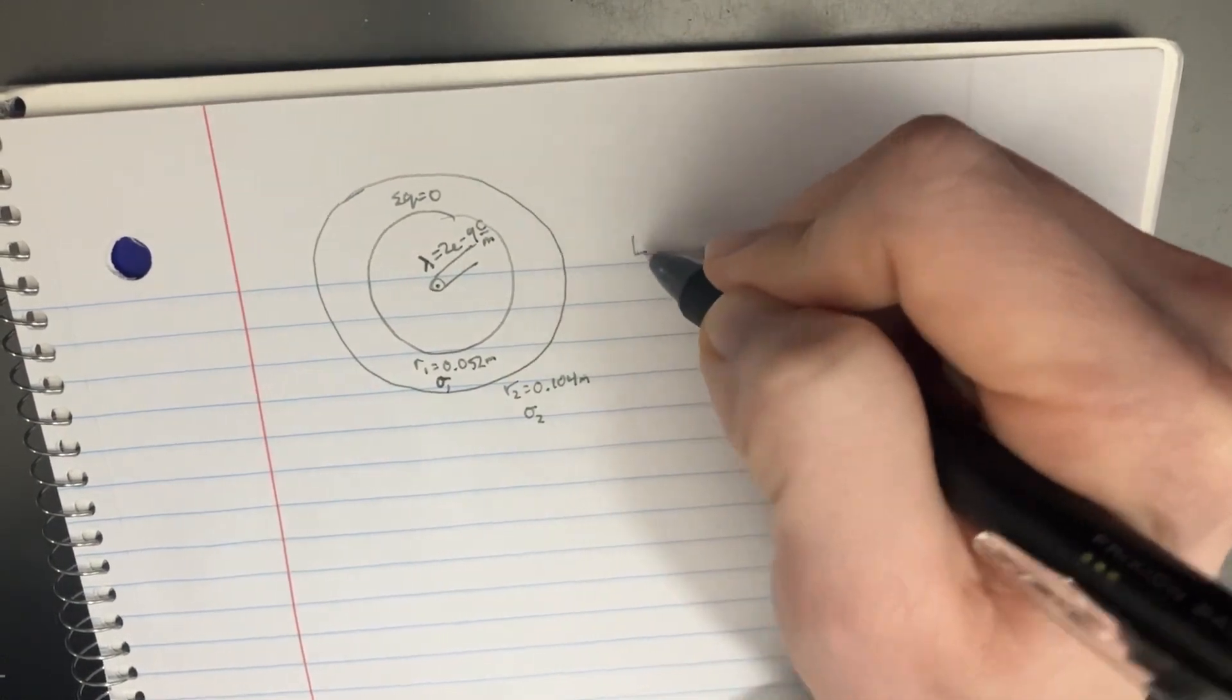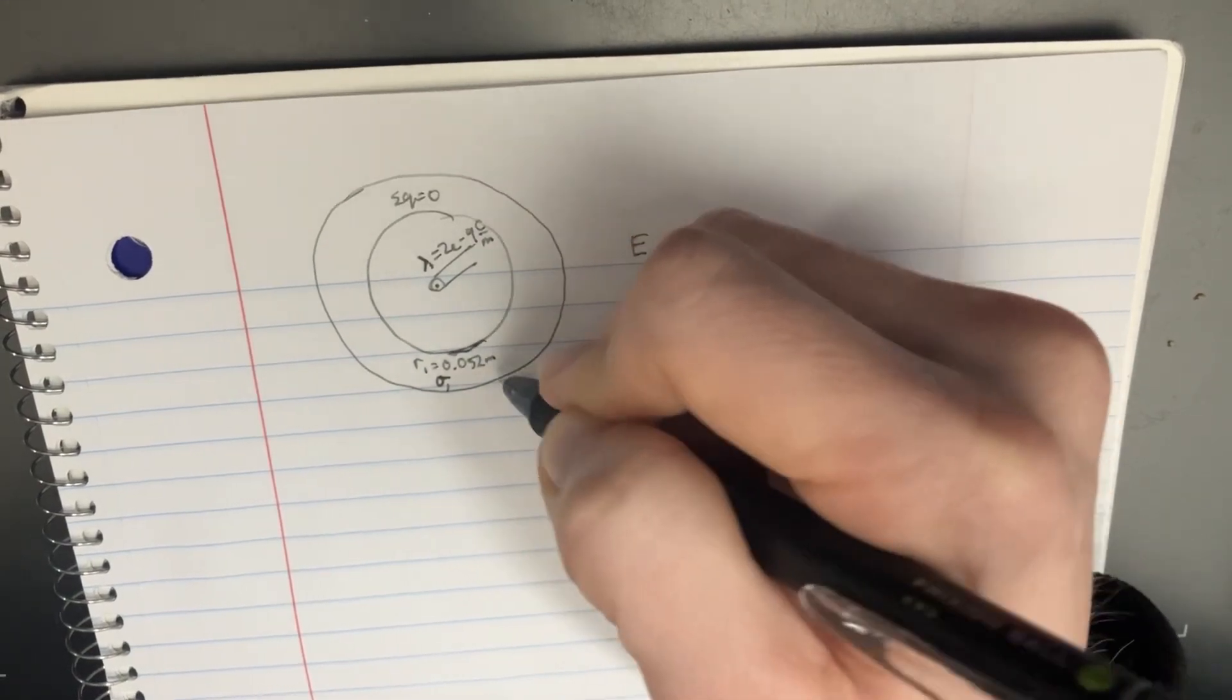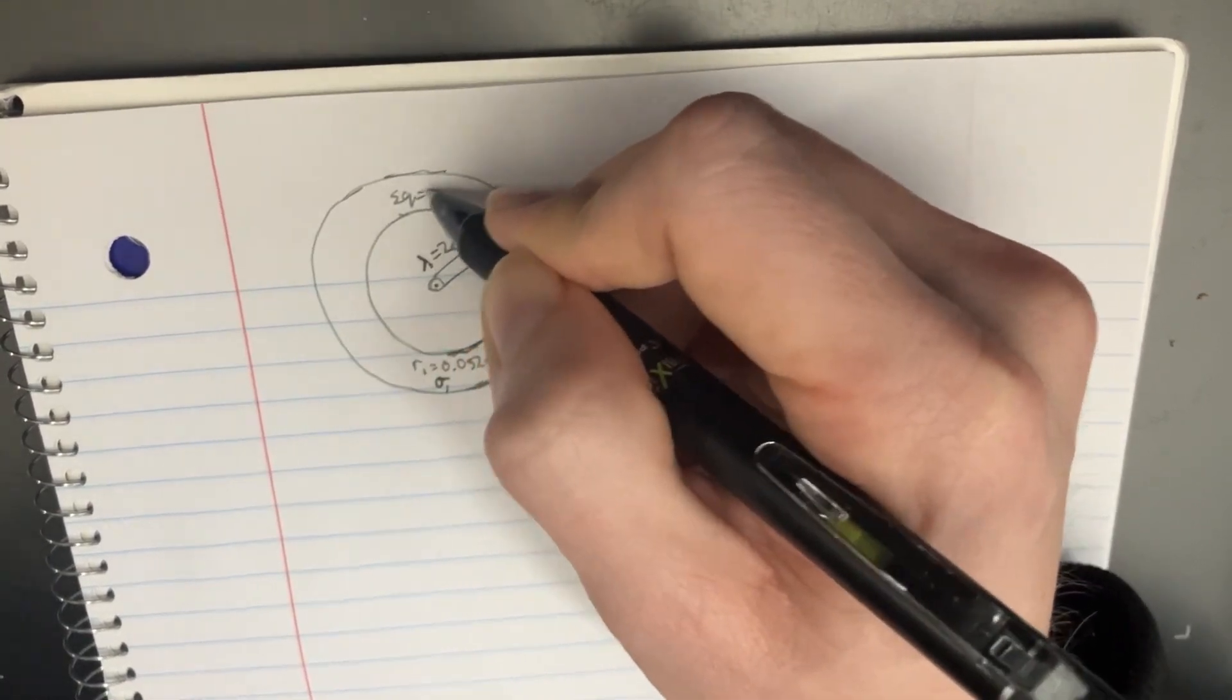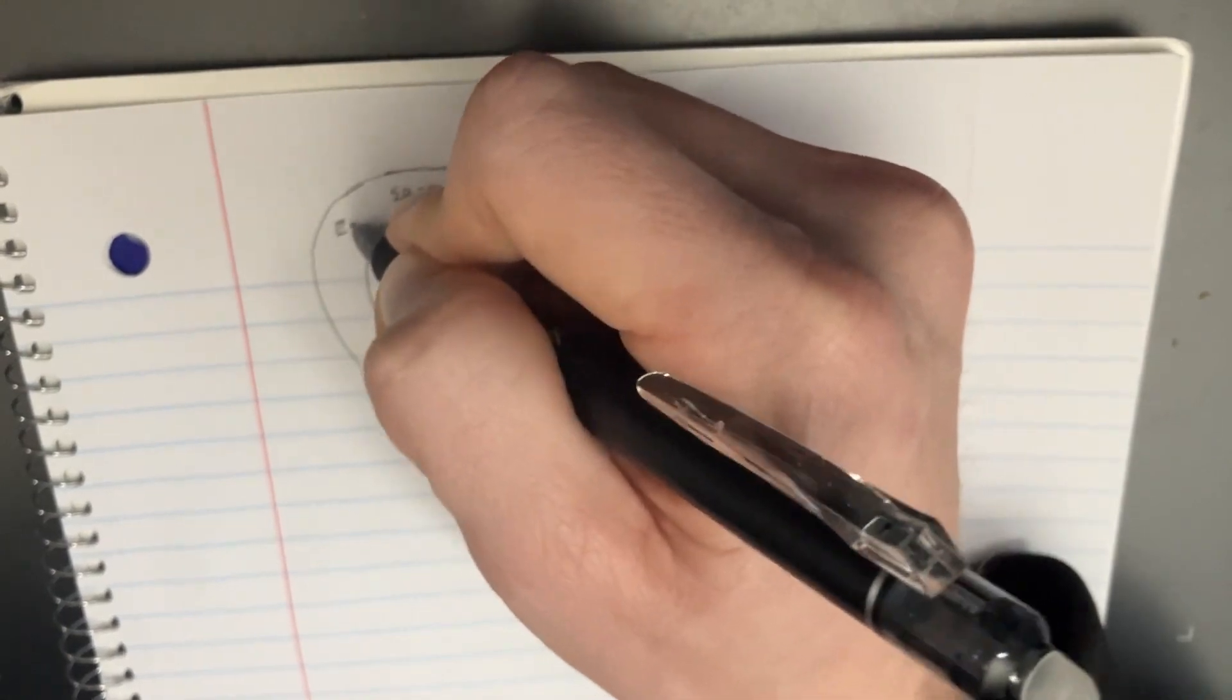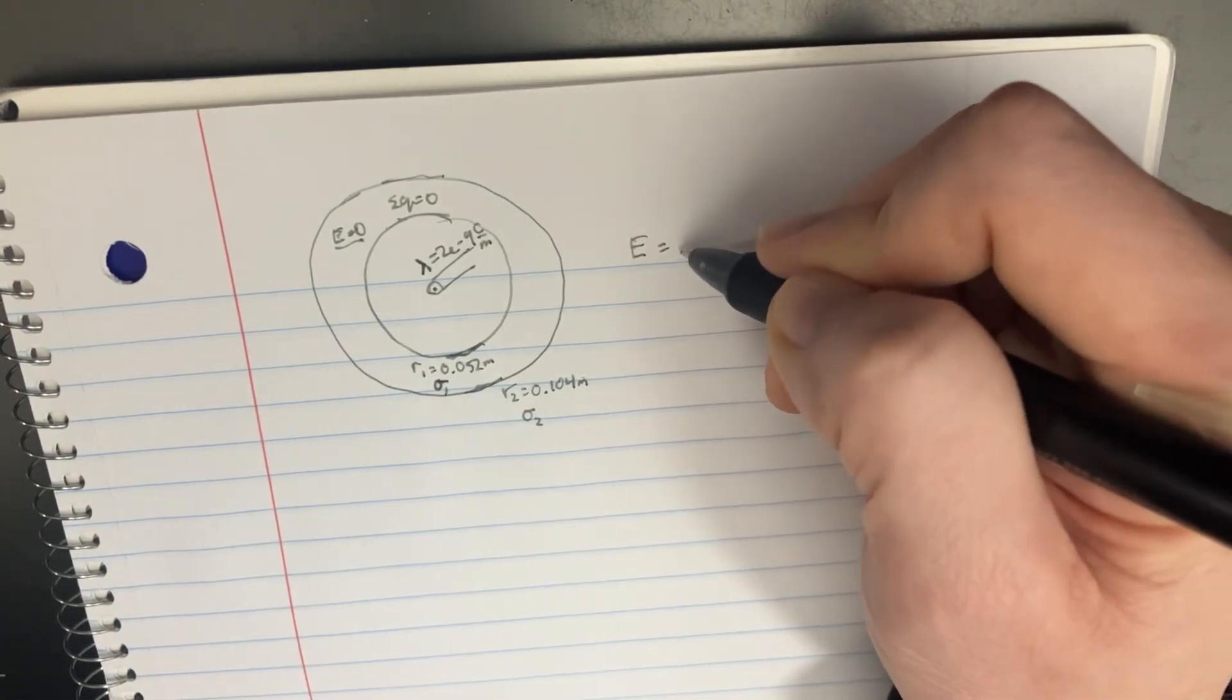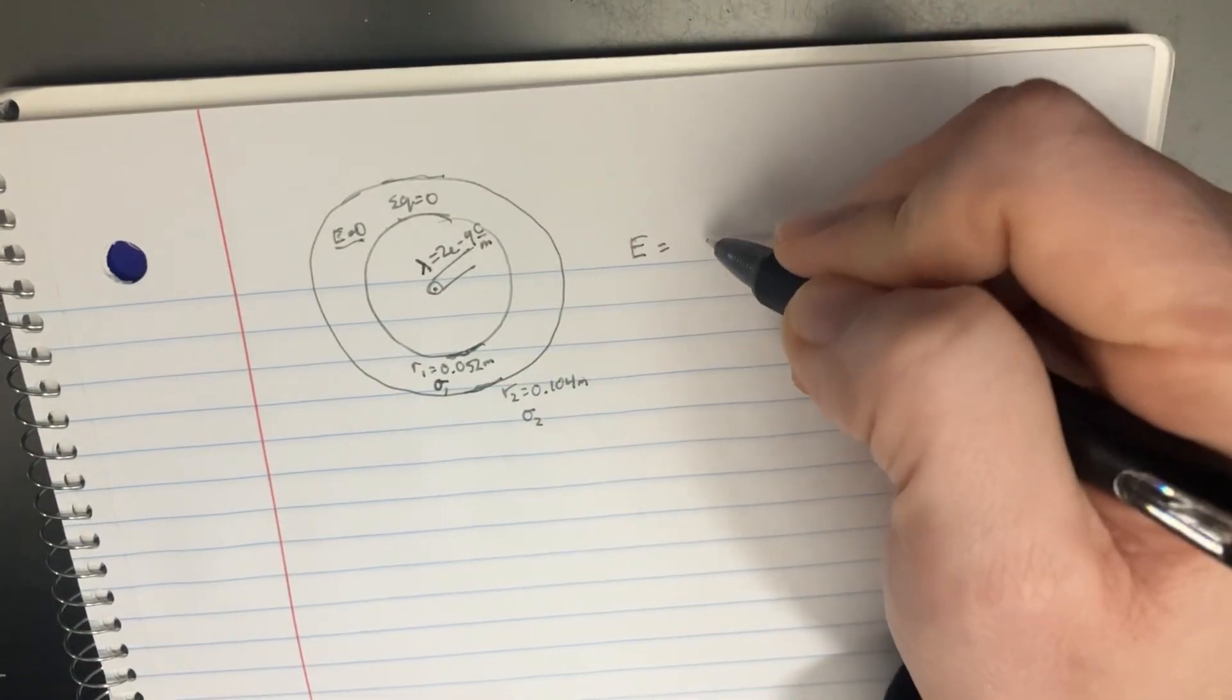Let's go ahead and try using the electric field to calculate the electric field at this particular point. Because we know this particular inner charge is supposed to be net zero, implying that the electric field in here is also going to be equal to zero, just based off of Gauss's law. So let's go ahead and try to calculate the electric field here, because it's supposed to be net zero.